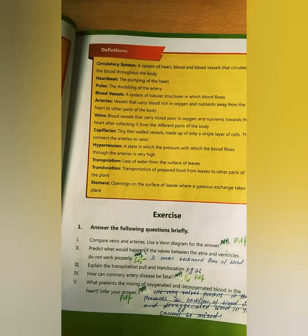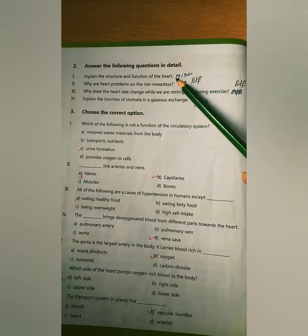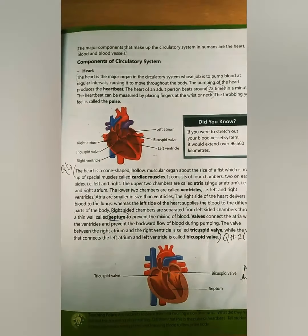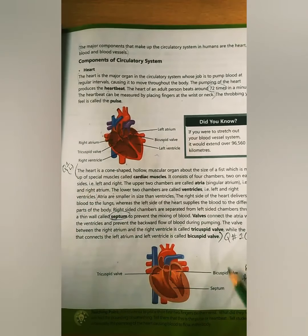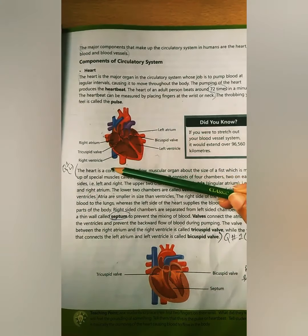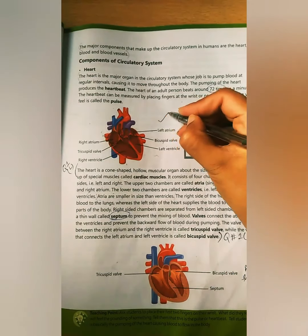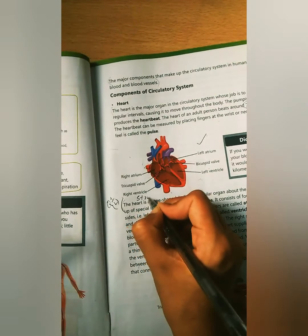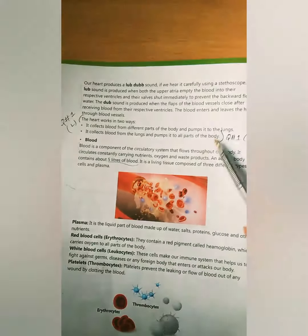The short questions are now done. Move on to page 30 for long questions. The first long question asks you to explain the structure and function of the heart. For this answer, refer to page 19 where the structure of the heart is explained under its heading, and then page 20 where the working parts of the heart and how it works with the body are discussed.